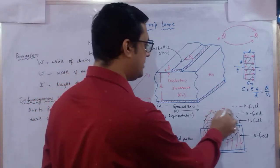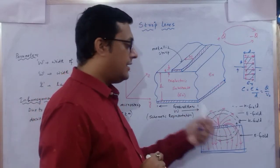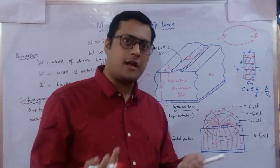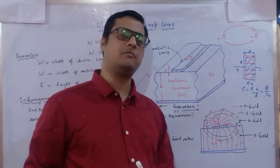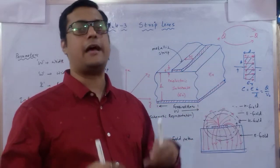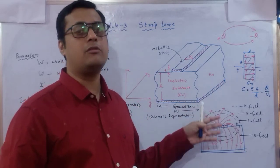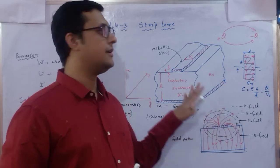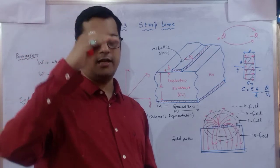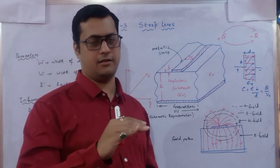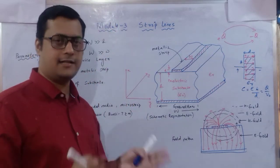The magnetic fields, shown as black lines, are present alongside the electric fields. This means both E and H fields are present, which should satisfy TEM mode — but it does not satisfy TEM; rather it is quasi-TEM. This is due to the inhomogeneous structure: air medium, then metallic, then dielectric, then metallic again.